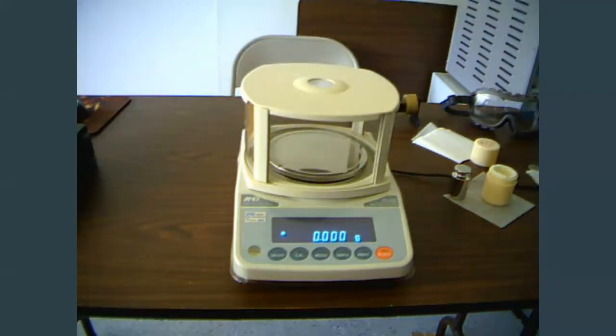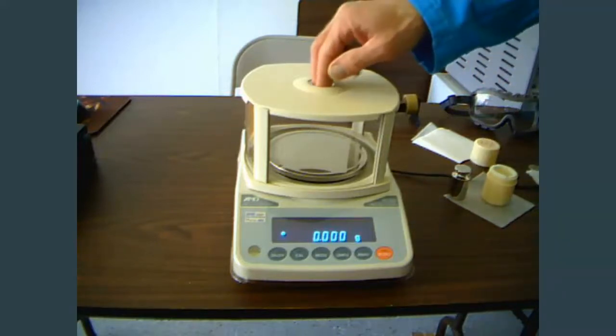So we do not want to find the mass of something directly on the pan. Obviously, if it's a liquid, it's going to run all over. If it's a solid, we're never going to get it all cleaned off of there. It may damage the balance as well.